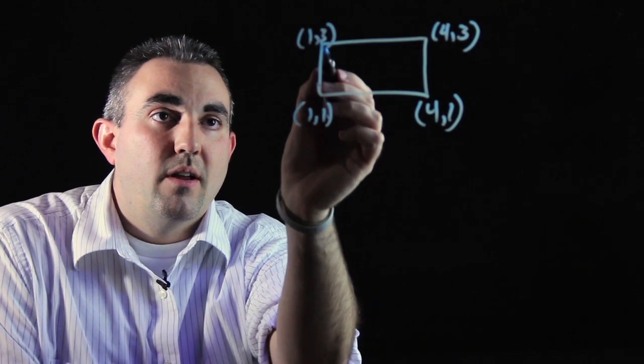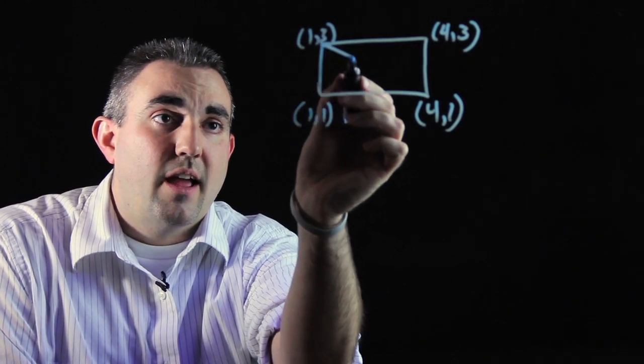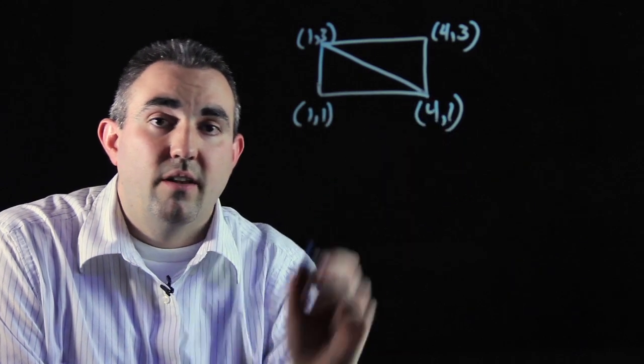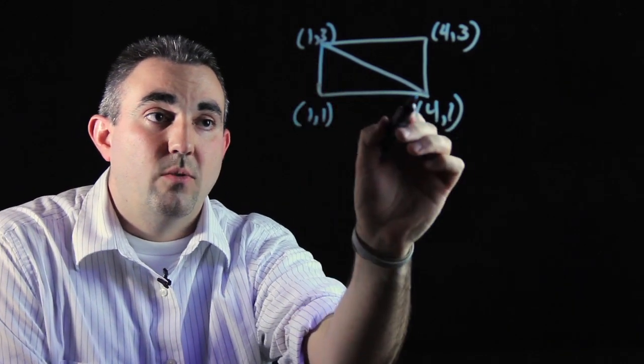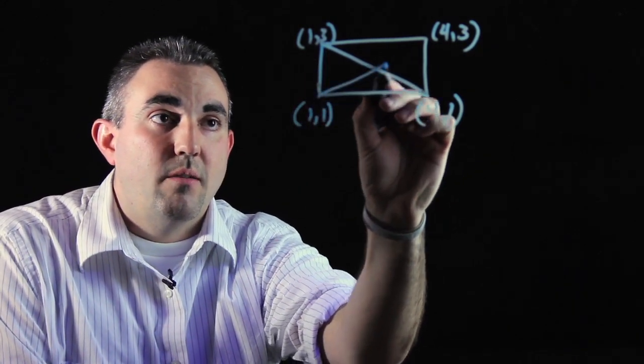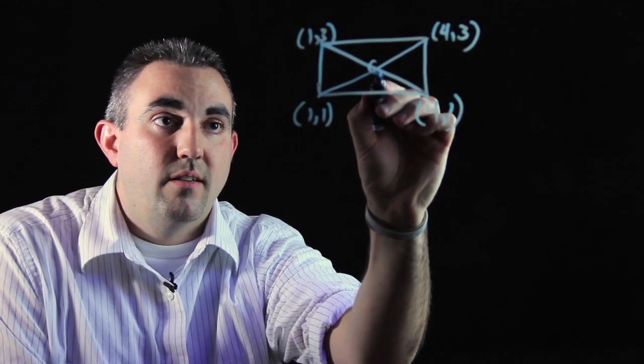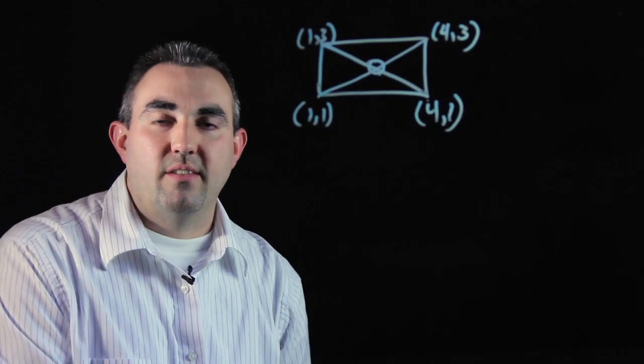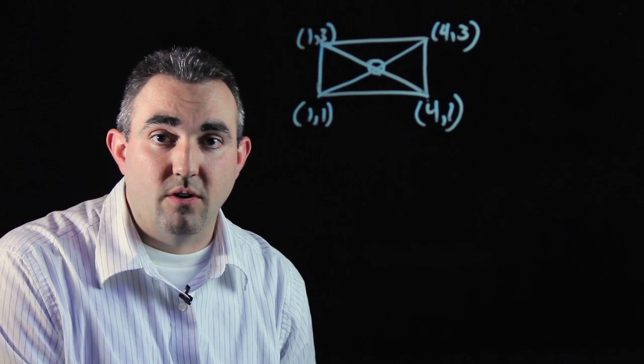The first thing you want to remember is what a diagonal is. A diagonal is a line that cuts straight across from one vertex to another, and if you find the meeting point of these two diagonals, that's where the centroid is and that's what we're going to be looking for right now.